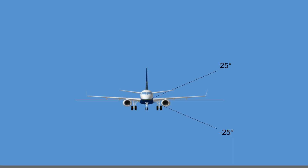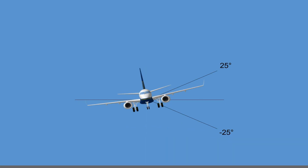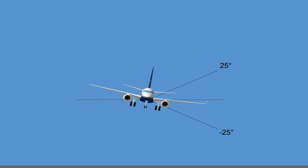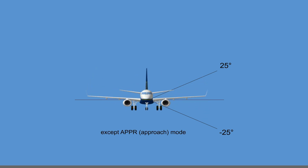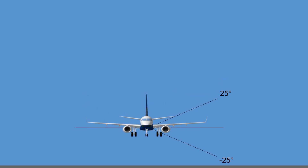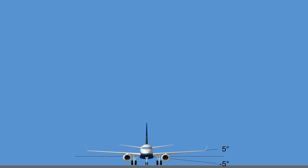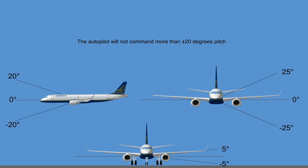The autopilot control limits for roll will be plus or minus 25 degrees, except in approach mode. In approach, the roll limits will be reduced linearly from plus or minus 25 degrees above 200 feet radio altitude, to plus or minus 5 degrees at 0 feet radio altitude. The autopilot will not command more than plus or minus 20 degrees pitch.